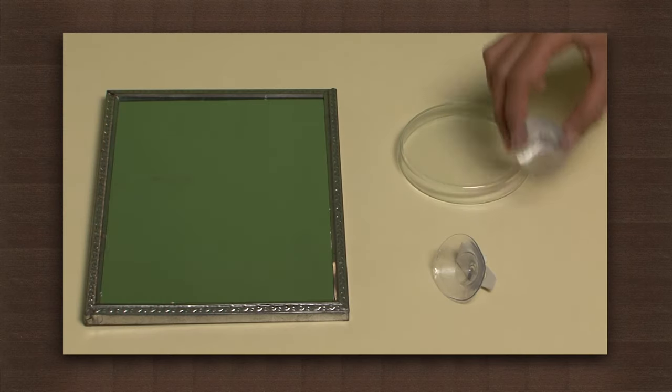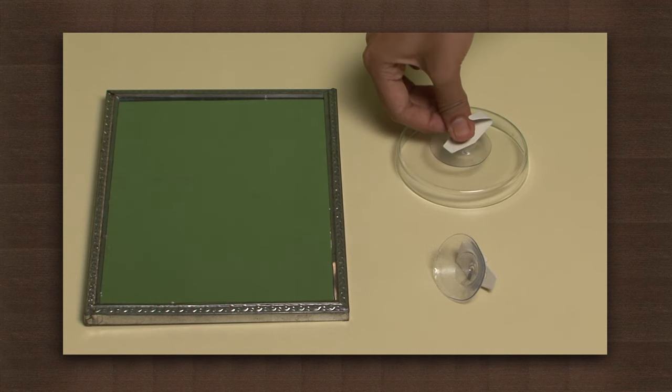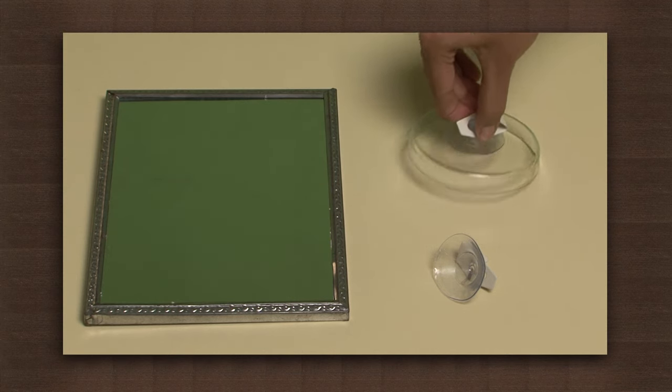Take the rubber sucker and press it on the surface of the petri dish. Now you can lift the petri dish with the sucker.